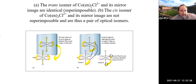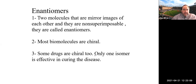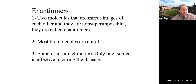Enantiomers are two molecules that are mirror images of each other and non-superimposable — they're chiral. Many biomolecules are chiral, and even some drugs are chiral — sometimes only one enantiomer is effective in treatment because the different connectivity results in different properties, even though the molecules are made up of the same core elements.